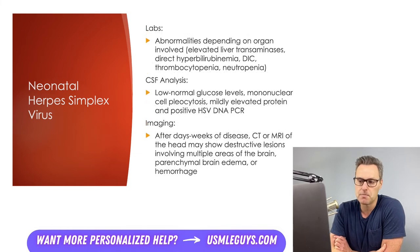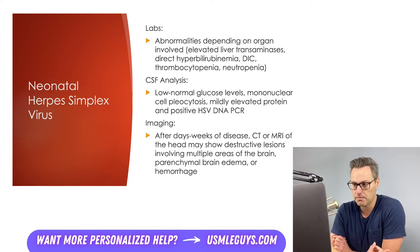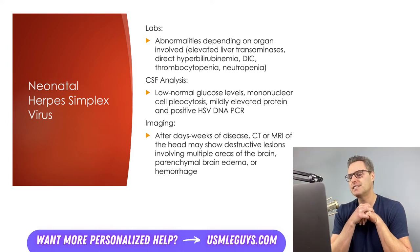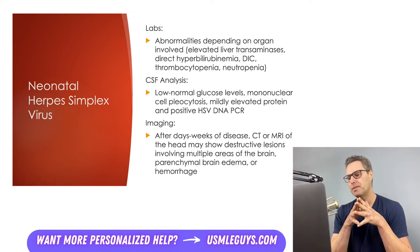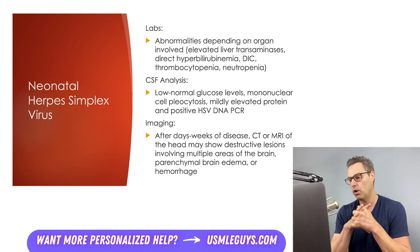Lab abnormalities vary depending on whether the patient has skin-eye-mouth disease, CNS disease, or disseminated disease. Disseminated disease findings include elevated liver transaminases, direct hyperbilirubinemia, labs indicating DIC, thrombocytopenia, and/or neutropenia. CNS infections can be identified via CSF analysis showing low-normal glucose, mononuclear cell pleocytosis, mildly elevated protein, and positive HSV DNA PCR. Initially imaging may be normal, but after days to weeks, CT or MRI may show destructive lesions in multiple brain areas, parenchymal brain edema, and/or hemorrhage.